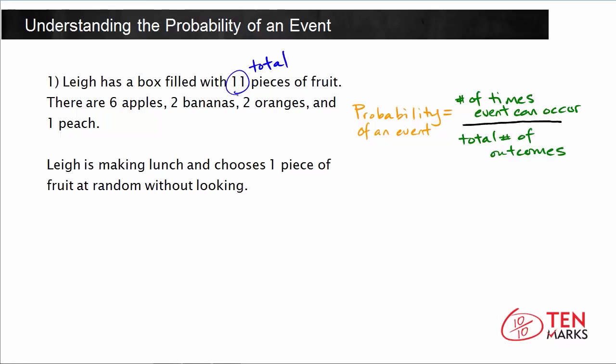Now, we want to know how many times is it that the event of peach occurs. Well, there's one peach, so that means that the event can only occur one time. To take the probability, so I'm just going to write P of peach, which means probability of peach, equals number of times that can occur, which is 1, divided by the total number of outcomes, which is 11.